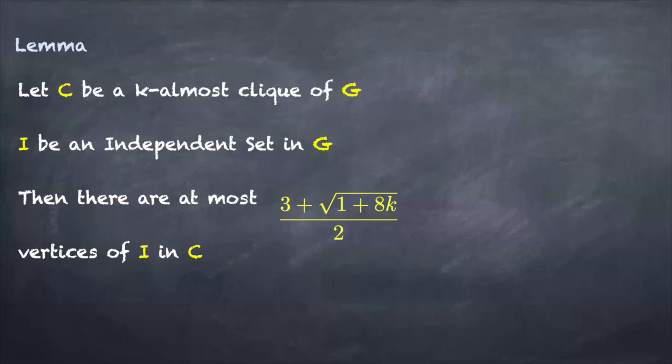And to bound the number of states in the dynamic programming we prove the following lemma. Let C be a k-almost clique of G. That means the set of vertices such that after I add k edges to the graph G this set C becomes a clique. That's a clique in the triangulation of graph G. And let I be an independent set in graph G. Then there are at most (3 + √(1+8k))/2 vertices of independent set I in C.